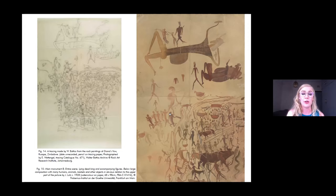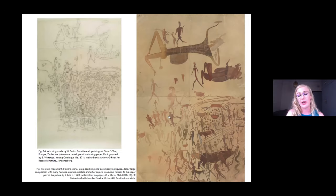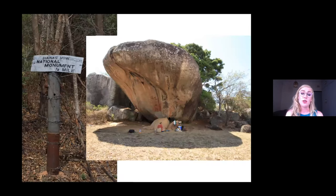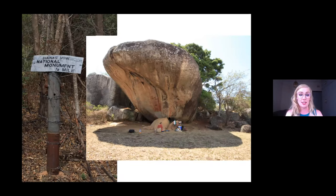This assumption led me to investigate who authored the primary copy that Battis may have relied on to produce his version of the panel. It was at this point that I unearthed a copy in the Frobenius Institute's online image database of the same panel, produced some years prior to Battis's rendering, made by Joachim Lutz of the Frobenius expedition. In this slide, you can see Battis's copy on the left and Lutz's copy on the right. The discovery of this point of intersection happened to coincide with the weeks leading up to my participation in a field trip to Great Zimbabwe in 2015, which inspired a small group of us to embark on a day trip to visit Diana's Val.